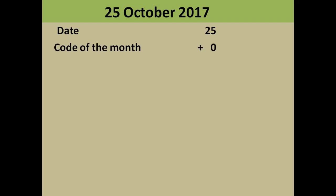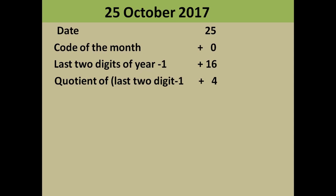Let's find the day for 25th October 2017. The method: take the date (25), add the code of the month — October is 0. Then take the last two digits of the year (17), subtract 1 to get 16, and add it to the sequence. Next, take the quotient of (last two digits minus 1) divided by 4: 16 divided by 4 gives quotient 4.